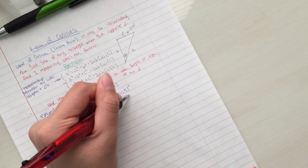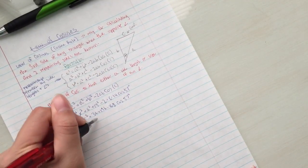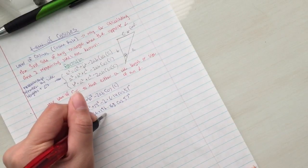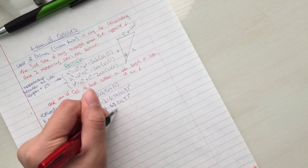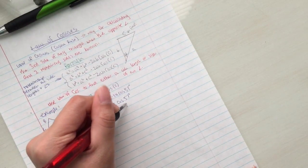Then, if you keep on simplifying this, x squared equals 36 plus 196 minus 168 times cosine of 57.